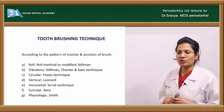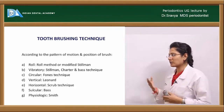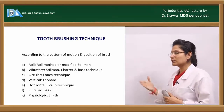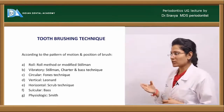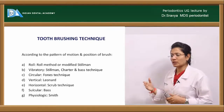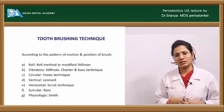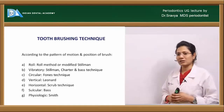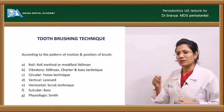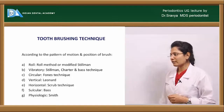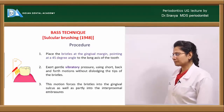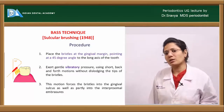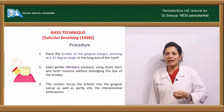Toothbrushing techniques can be classified based on the pattern of motion and position of the brush. You have the roll technique, vibratory, circular, vertical, horizontal, and physiological methods. The roll technique includes the roll method and modified Stillman method. Vibratory techniques include Stillman's, Charters, and Bass methods. Circular is Fones' technique, vertical is Leonard's technique, horizontal is the scrub technique, and the physiological one is the Smith technique.